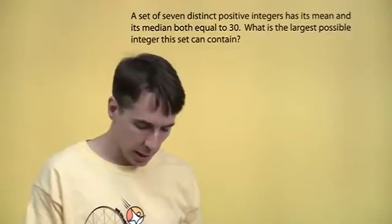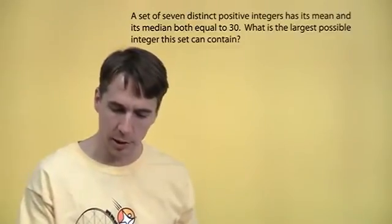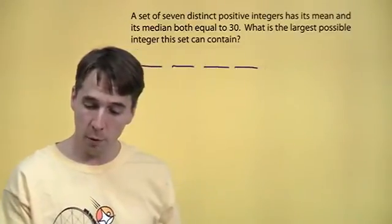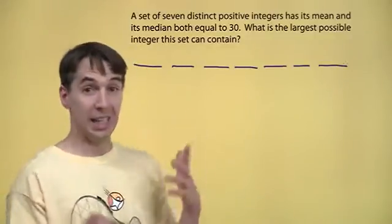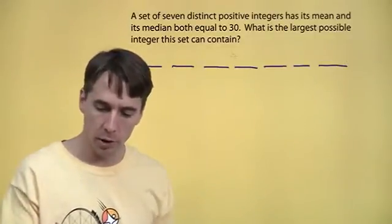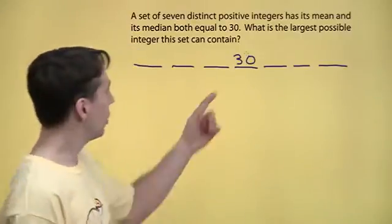Seven numbers. Alright, we'll do, well, we did, last time, we did just start off by drawing out the blanks. One, two, three, four, five, six, seven. Seven numbers. And the median, well, the median is the middle. So we know that one of the numbers, at least, one of them is 30.